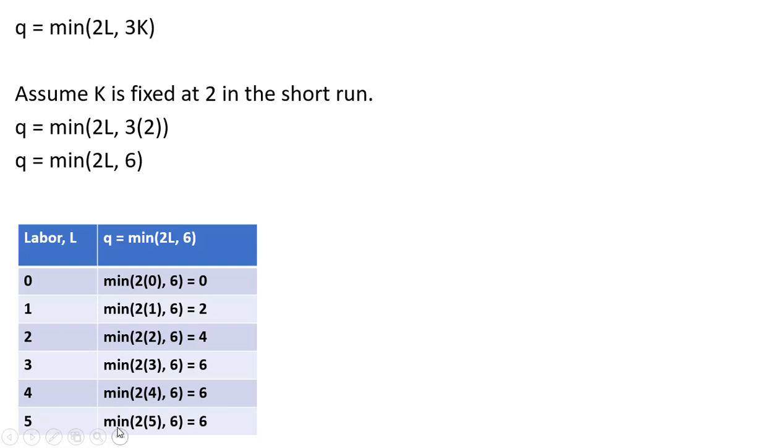When labor is 5, output will be the minimum of 10 or 6 — again, it's going to be 6.